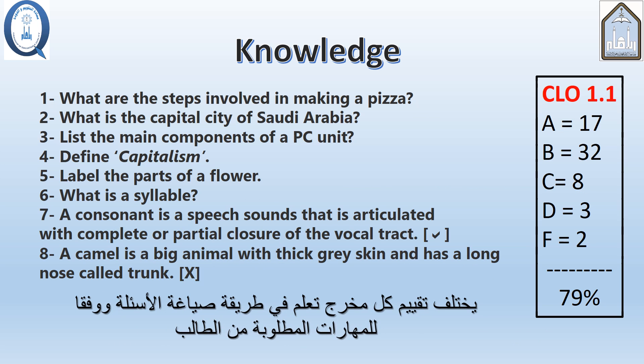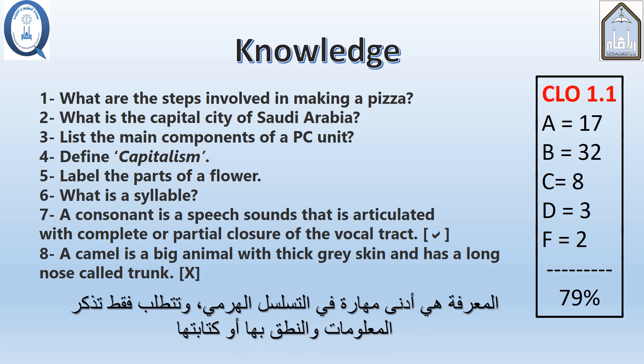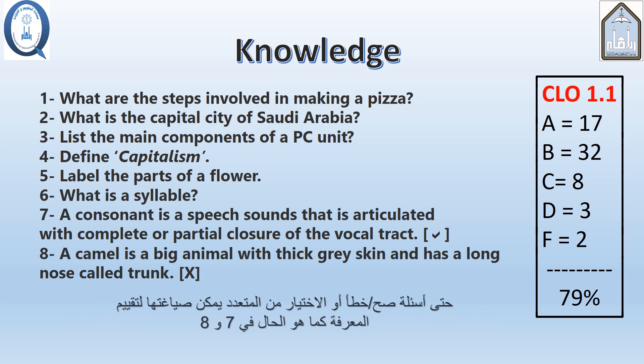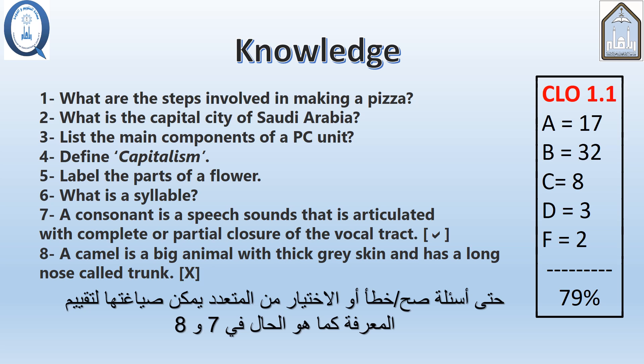The assessment of each CLO differs in the way the questions are worded and according to the skills required from the students. Knowledge is the lowest skill in the hierarchy and requires only remembering information and saying or writing it down. These questions require the learner to recall previously memorized information. Even true-false or multiple-choice questions can be worded to assess knowledge, as in numbers 7 and 8.